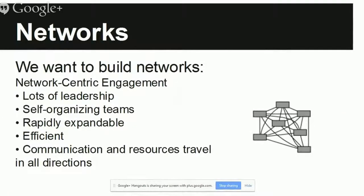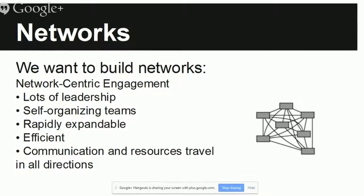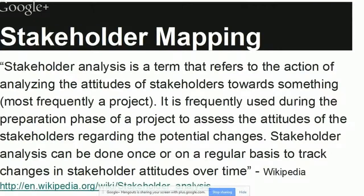So we want networks. We want network-centric engagement. We want lots of leaders. We want self-organizing teams. We want to expand rapidly, be pretty efficient, and communicate and spread resources in all directions — to create communities that share on their own, lead on their own, and do their own thing. And part of that, the first step, is stakeholder mapping.